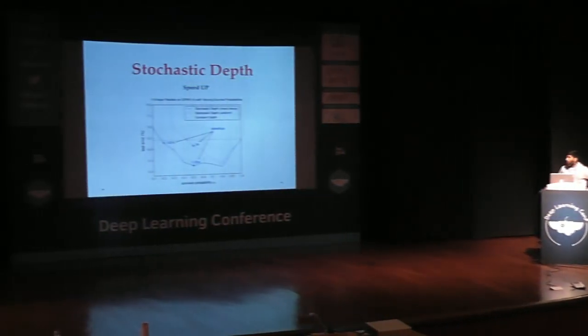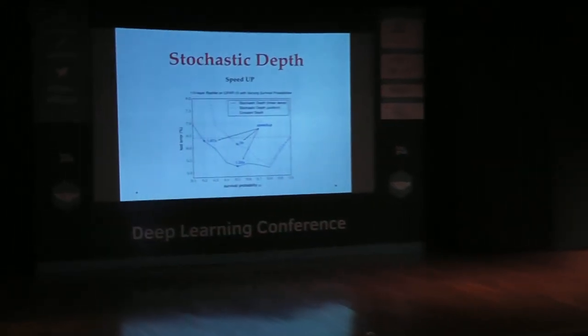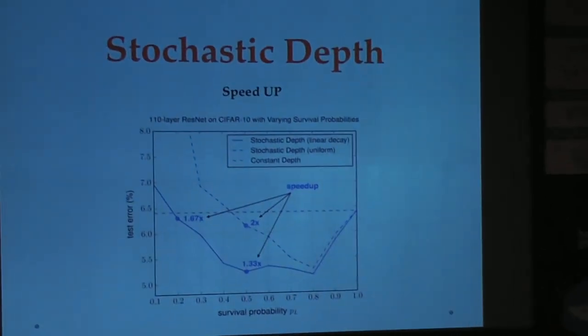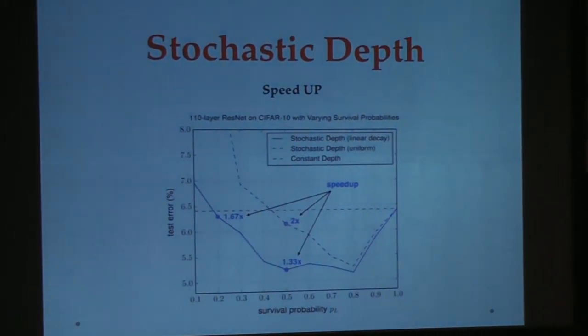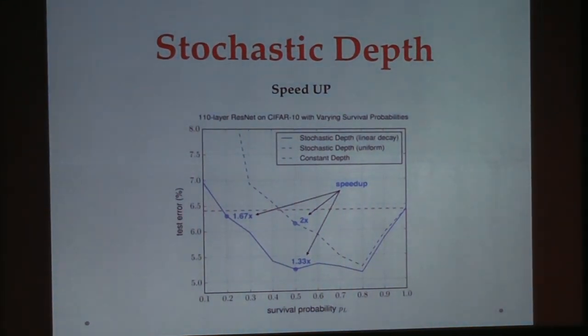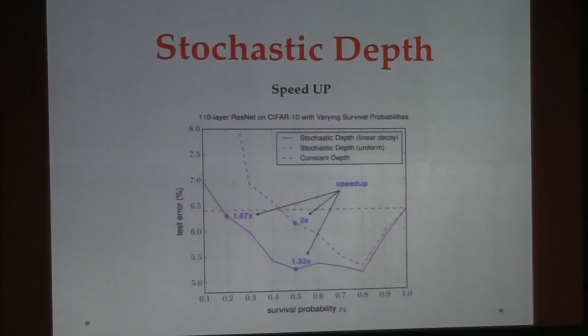Here you can see test errors on the y-axis and survival probability — the numbers above the vertical lines — on the x-axis. By choosing what test error you want and what survival probability you assign to the layers, you can see a speedup of up to 2x.